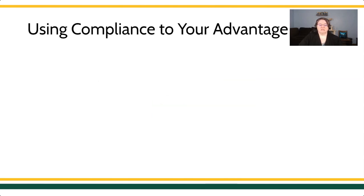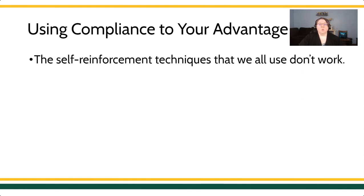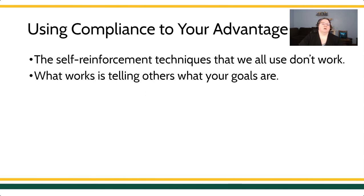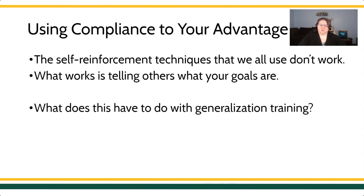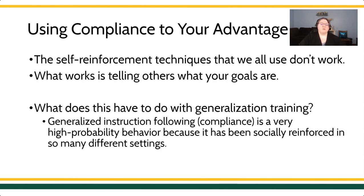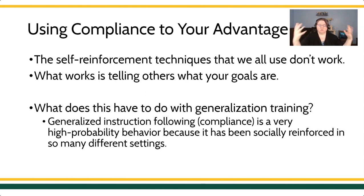You can use compliance to your advantage. If you know that self-reinforcement alone doesn't work, what does work is telling others your goals — having a public goal, sharing it with someone, and asking others to help keep you accountable. Meeting a goal involves high-probability behavior: following a rule, communicating your goals to others creates a situation where you're more likely to follow through because you have a history of social reinforcement for meeting goals. It's an advanced conceptual application — how do we take this generalized rule-governing behavior and use it for our own benefit? We make ourselves accountable to others because we know we will follow through when accountable.